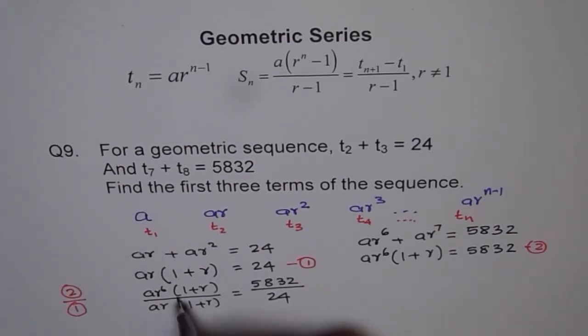a r to the power of 6 times 1 plus r over a r times 1 plus r equals to 5832 divided by 24. If I do that, this cancels out, and a and a cancels out and we're left with r to the power of 5. So we get r to the power of 5 is equal to 5832 divided by 24, which is equal to 243.